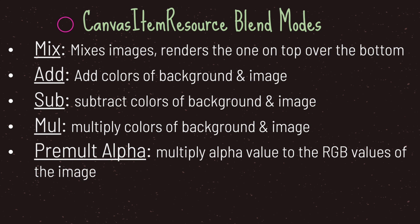Next on the list is add. If you decide to set your blend mode to add, you will basically add the colors of the background and the image. The third option is subtract, and you basically do the opposite of addition — you subtract the colors of the background and the image. The fourth choice is multiply, and just like addition and subtraction, you will multiply colors of the background and the image.